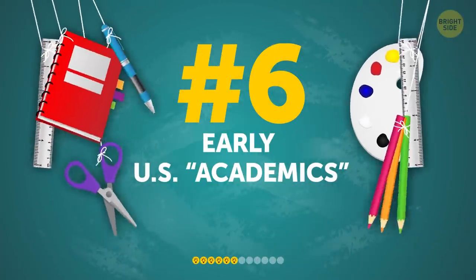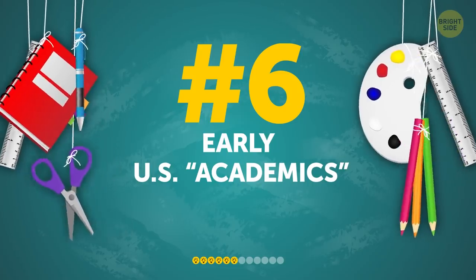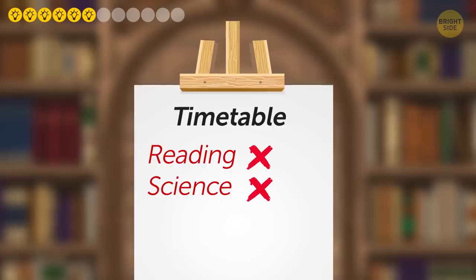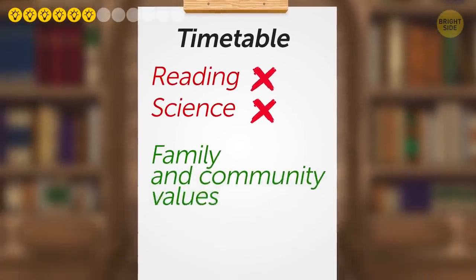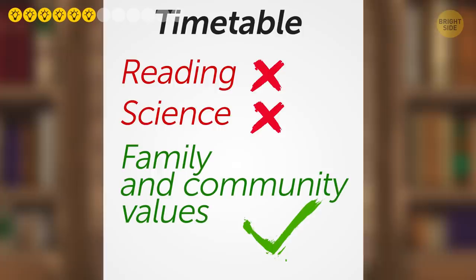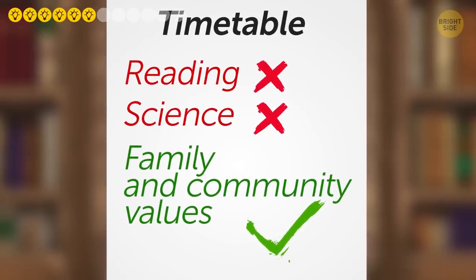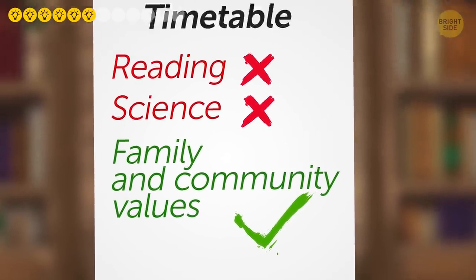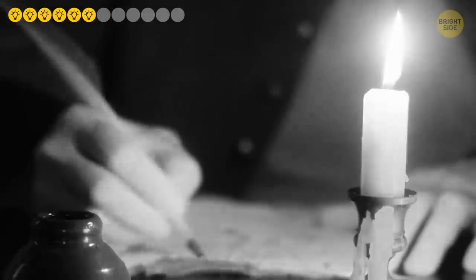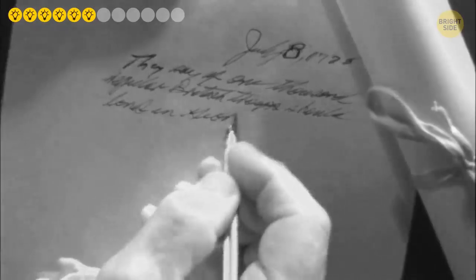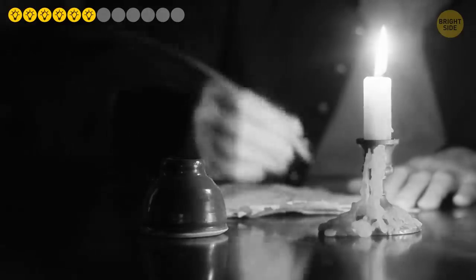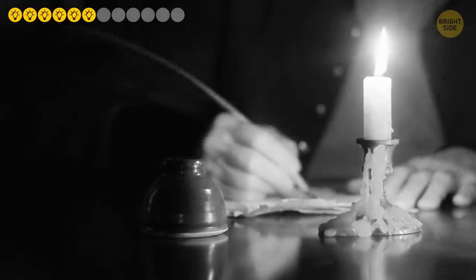Number six: early US academics. Early American schools didn't teach subjects like reading or science. The early colonists wanted to teach their children more about family and community values so that they could be productive members of society. In 1635, the colonies were a pretty young society, so it makes sense that teaching their children about the foundations of community was a very integral part of their education.